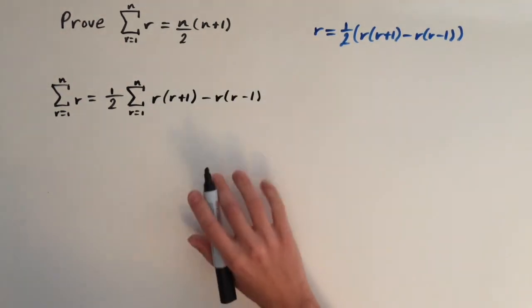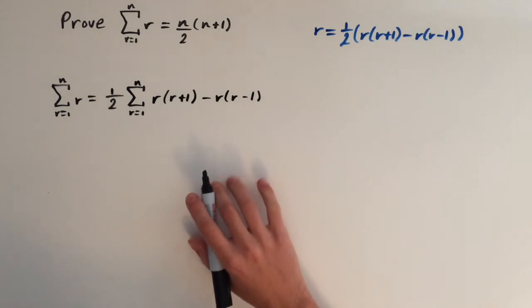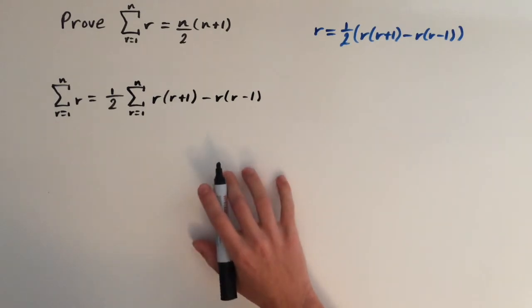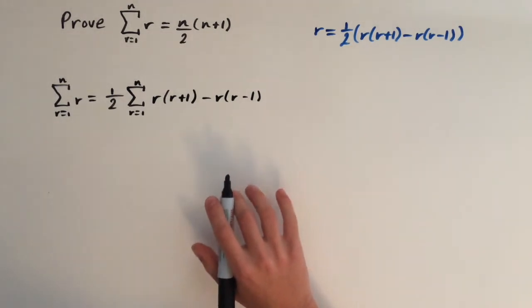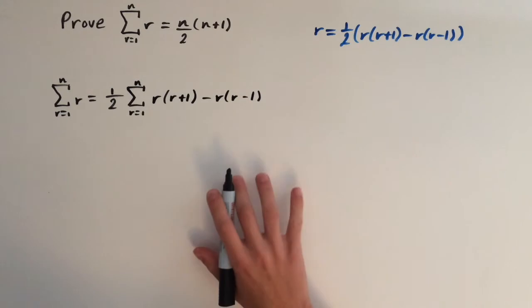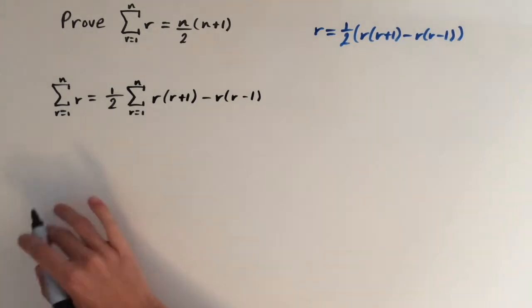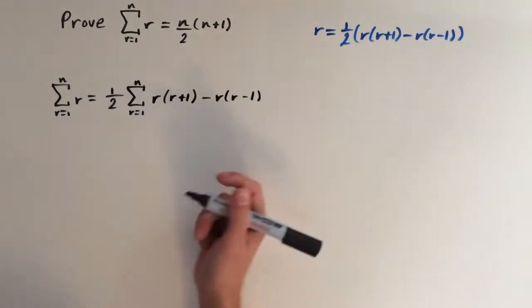What we're going to do now is called the method of differences. This is what we call it in the UK — in America I think they call it a collapsing series — and you're going to see why.